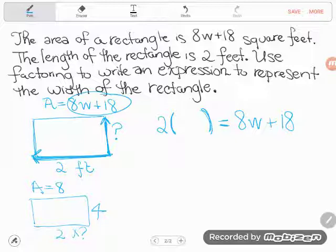So basically we're going to look at what would happen if I took the 2, divided the 2 out of 8w. Well if I divided the 2 out of 8w, I'd have 4w. And if I divided the 2 out of plus 18, I'd have plus 9.